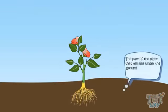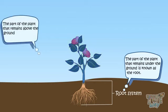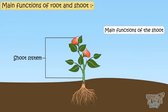The part of the plant that remains under the ground is known as the root. The part of the plant that remains above the ground is known as the shoot.